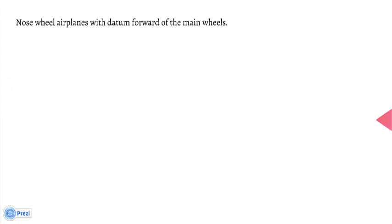Nose wheel airplanes with datum forward of the main wheels: CG equals D minus open parenthesis F times L, all over W, close parenthesis.